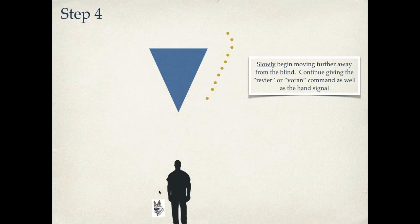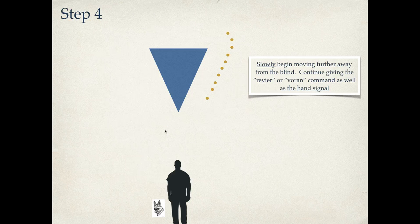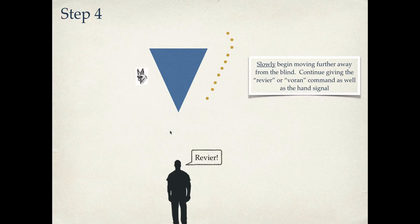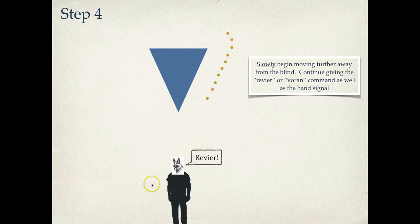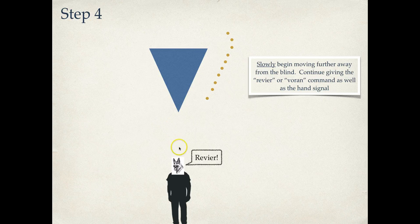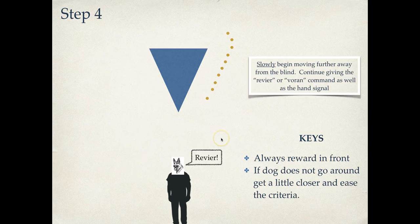Step four. We slowly start moving our way back. This doesn't have to be a fast process. We're going to slowly move our way back. If we run into any hiccups, we'll ease our criteria a little bit. Get a little bit closer and get some more good reps before we move back again. Continue giving Revere, Voran command as well as the hand signal. Dog goes all the way around, comes back to a good reward. Depending on where we're at in this step, we may have to move back in order to give a good position to reward the dog. But if you're a good distance back, you should be in a pretty good position already.